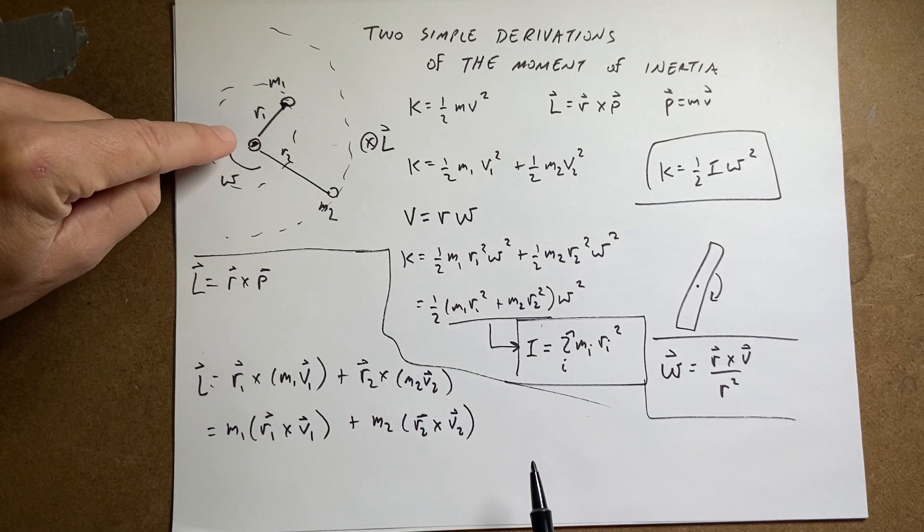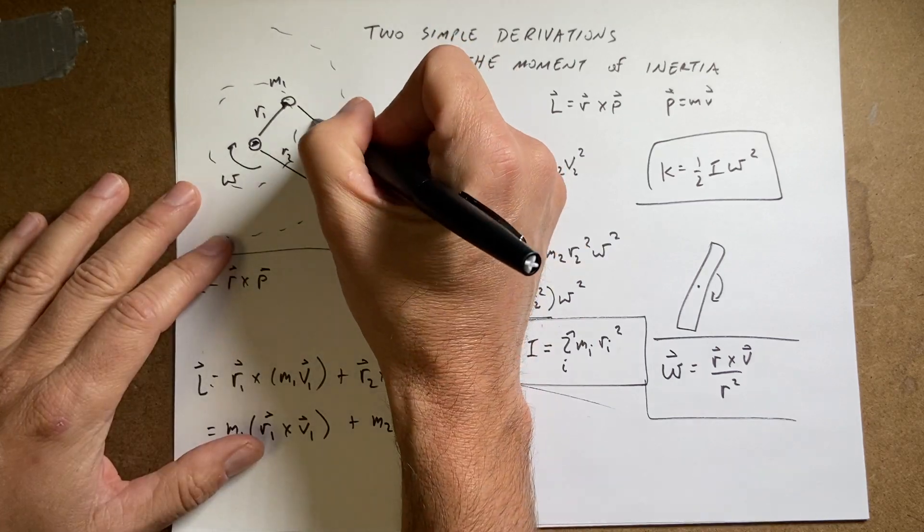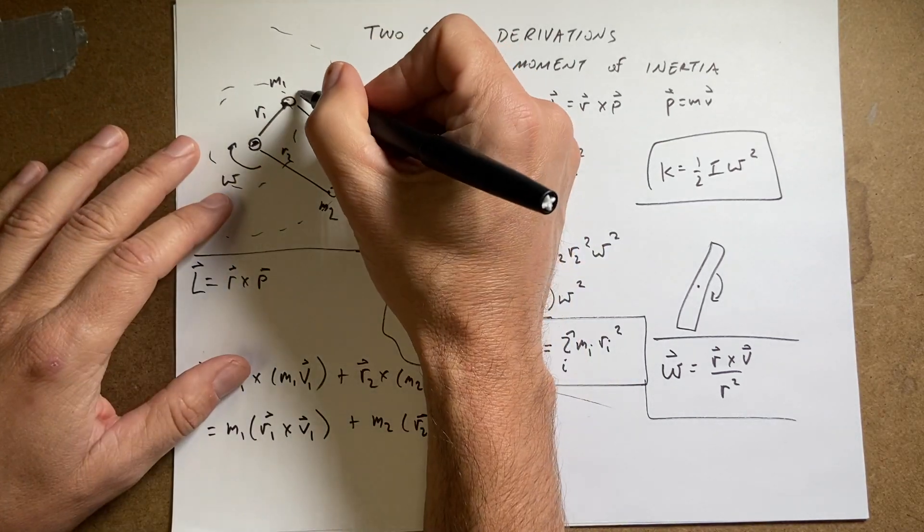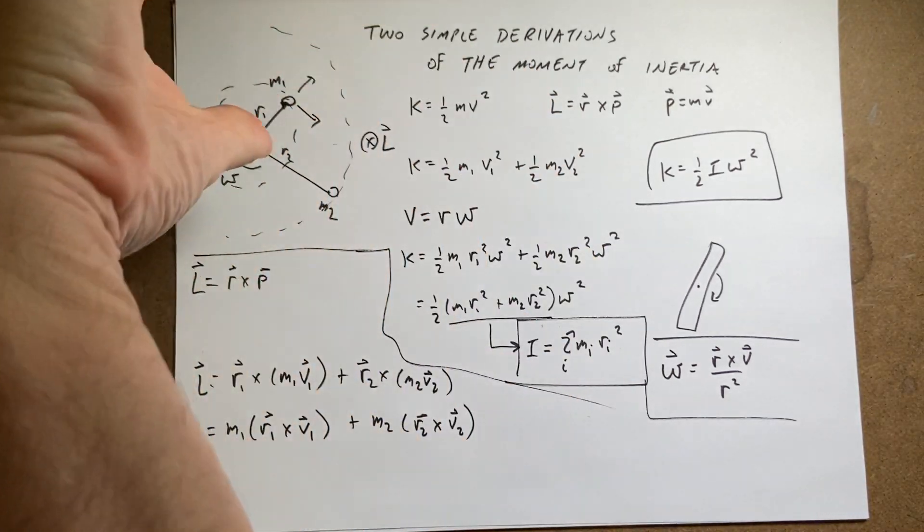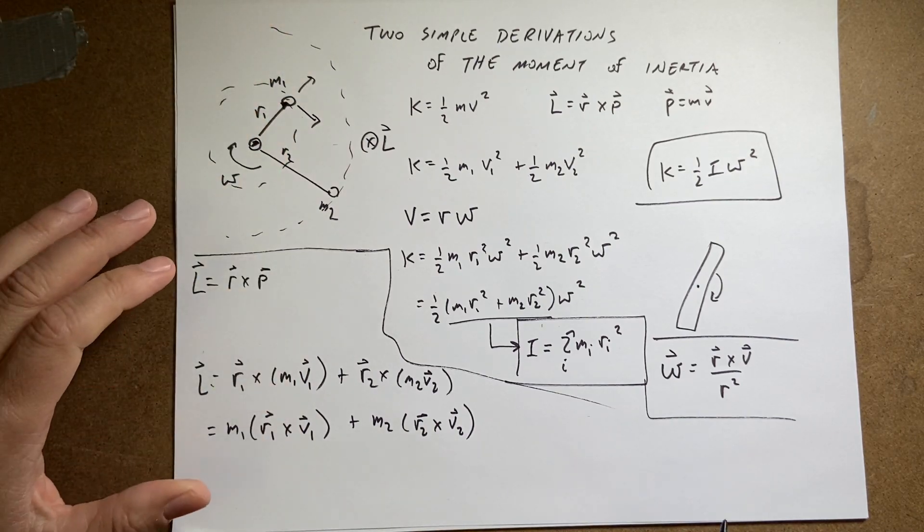And it does give the right units, right? Because if this has a velocity that way. So there's r, r cross v is in the right direction into the paper.